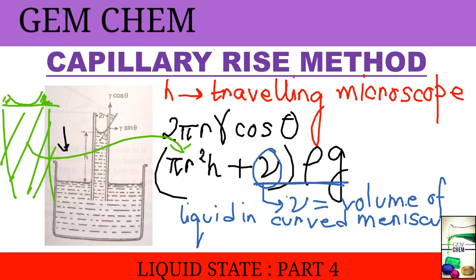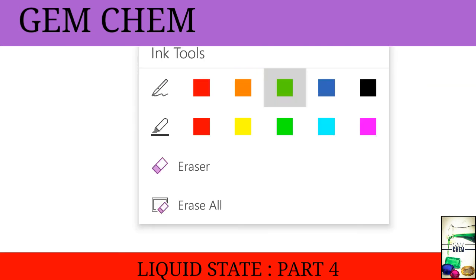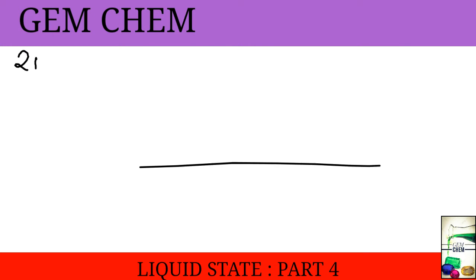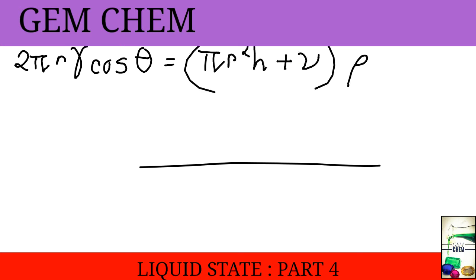Now these two are equal so we equate these two and we can write it as 2πr gamma cos theta equal to πr²h plus ν in bracket rho g. And the second part is that rho is our density of liquid and we consider here that the radius of curvature of the concave meniscus which we have observed is almost equal to the radius of capillary tube. So we can write ν as the volume as equal to πr³ minus 2/3πr³ and this is written as 1/3πr³.